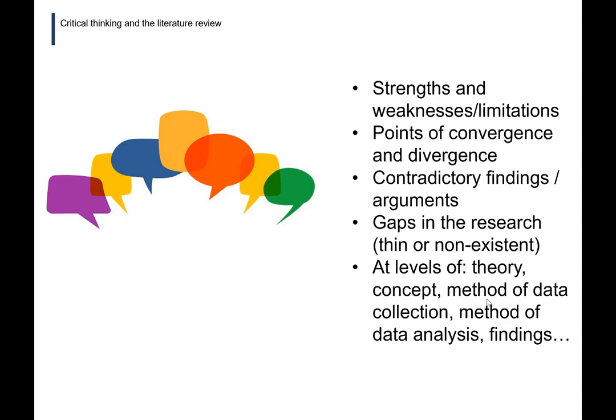When we're talking about critical thinking in the literature review, in general these are some things that could be a part of that. You could be looking at the strengths and weaknesses or limitations of the literature. You could be looking at points of convergence and divergence, looking at contradictory findings or arguments. You could be looking at and identifying gaps in the research, whether there's no research at all or whether the research is just sort of thin.